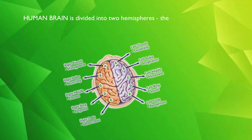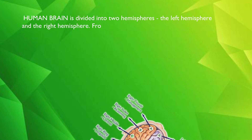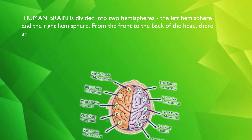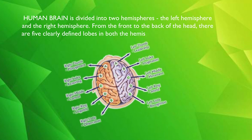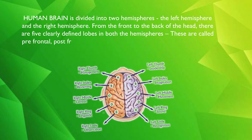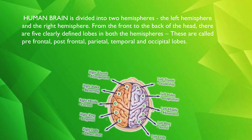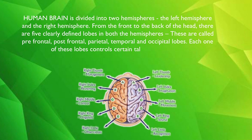The human brain is divided into two hemispheres — the left hemisphere and the right hemisphere. From the front to the back of the head, there are five clearly defined lobes in both hemispheres. These are called prefrontal, post-frontal, parietal, temporal, and occipital lobes.